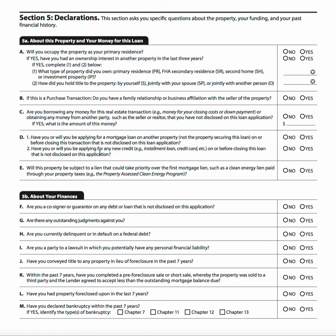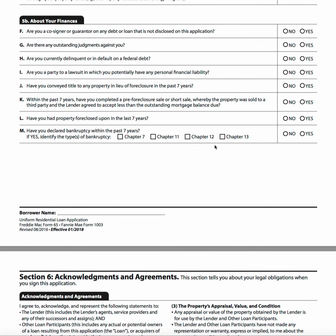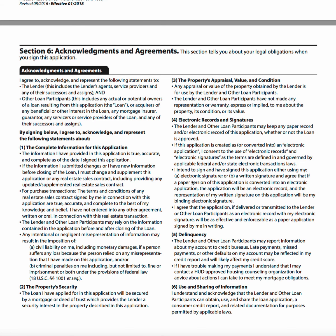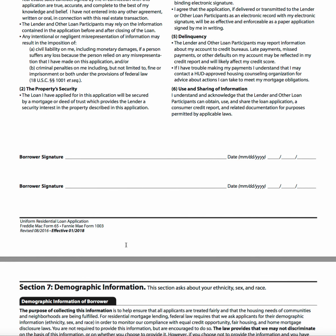Another new declaration asks: will you be applying for any new credit on or before closing this loan that is not disclosed on this application? And: is there anything that could interfere with the first lien position? The rest of the declarations include normal expected information, plus if someone has declared bankruptcy, the type must be indicated. The acknowledgments and agreements cover electronic records and signatures, property value, delinquency, use and sharing of information, followed by the borrower's signature and date.